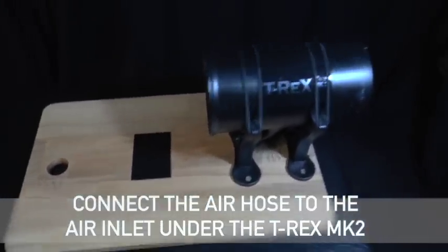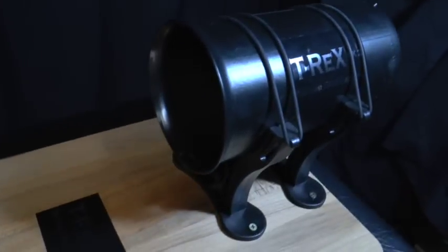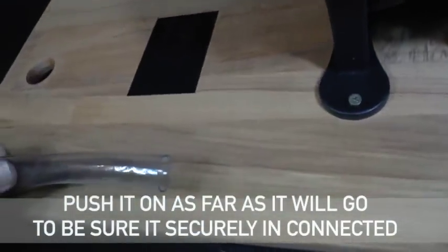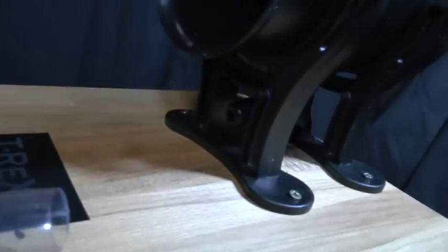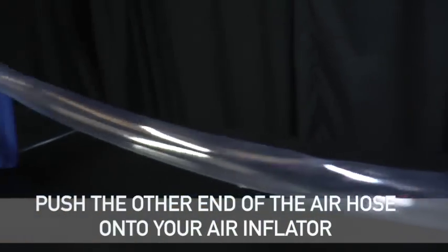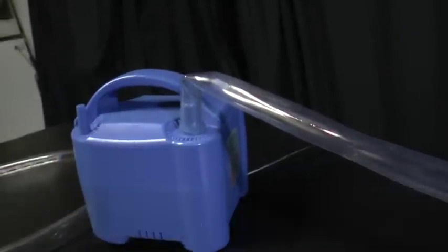Connect the air hose to the air inlet underneath the T-Rex Mark II. Push the air hose on as far as it will go to be sure it is secured in place, and then push the other end of the air hose onto your air inflator.